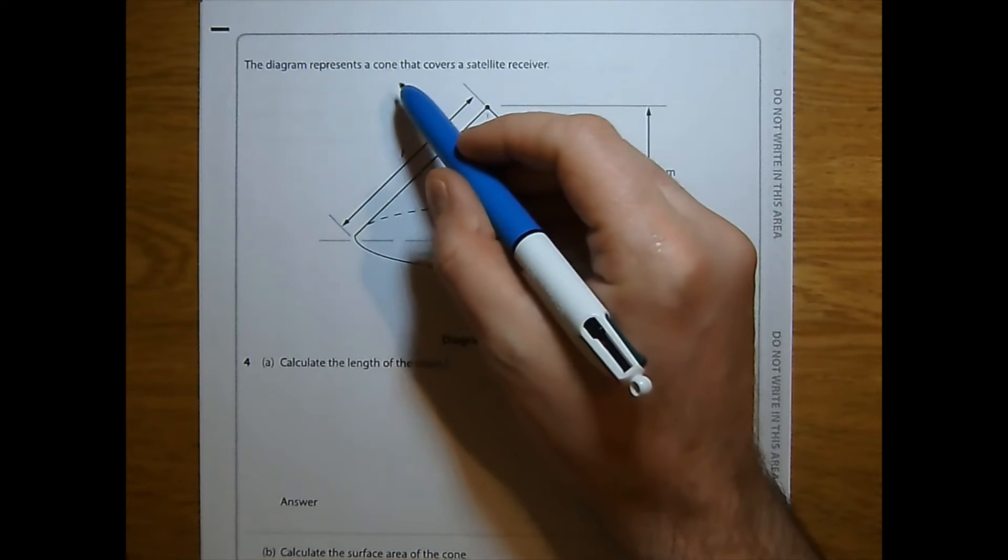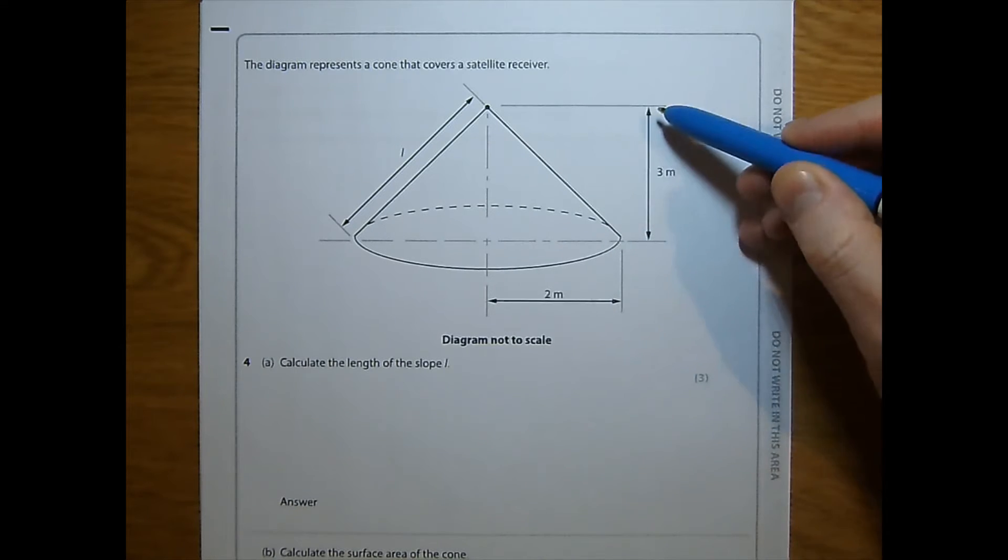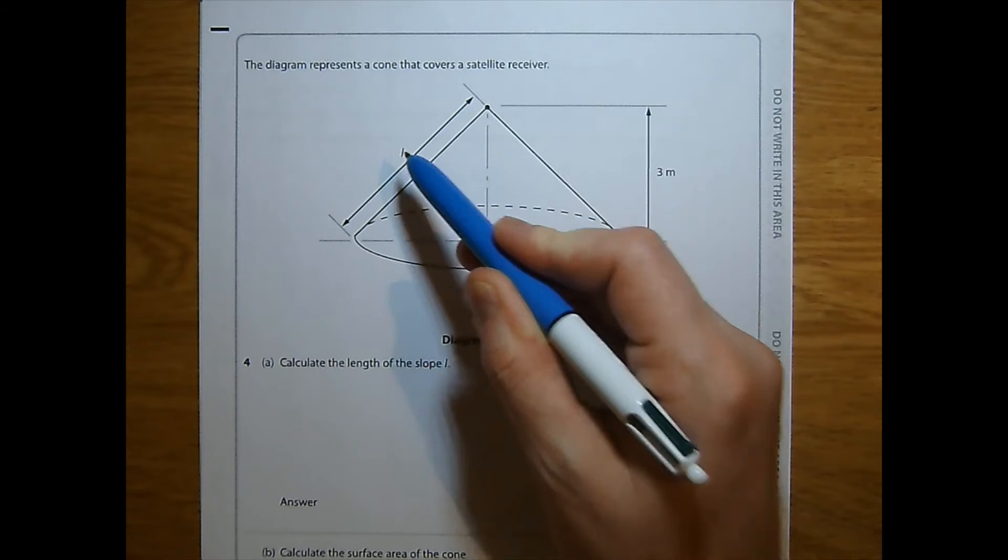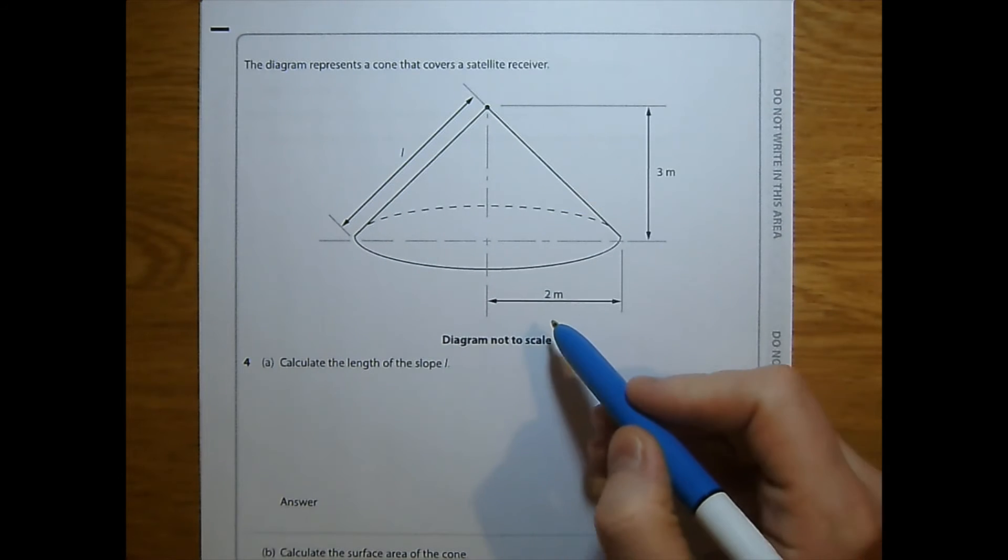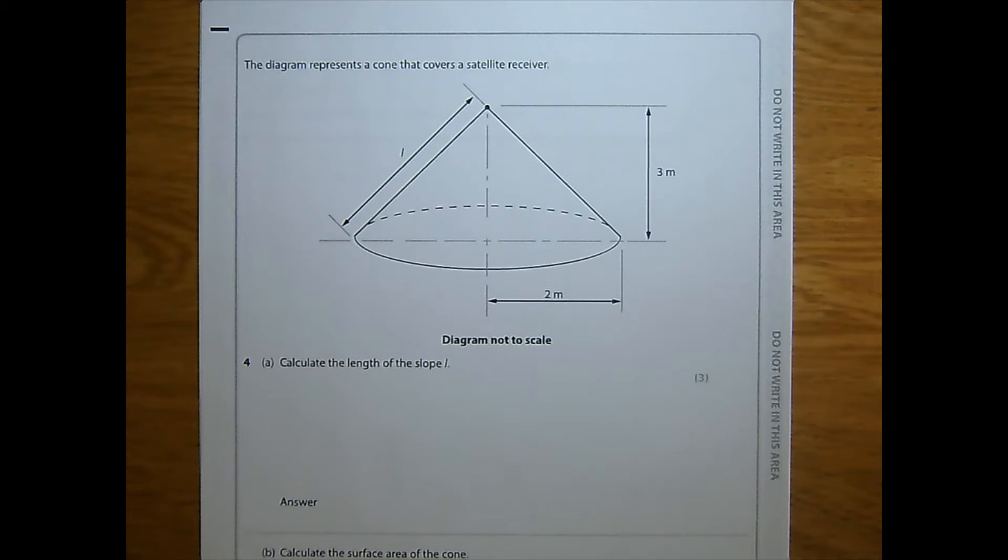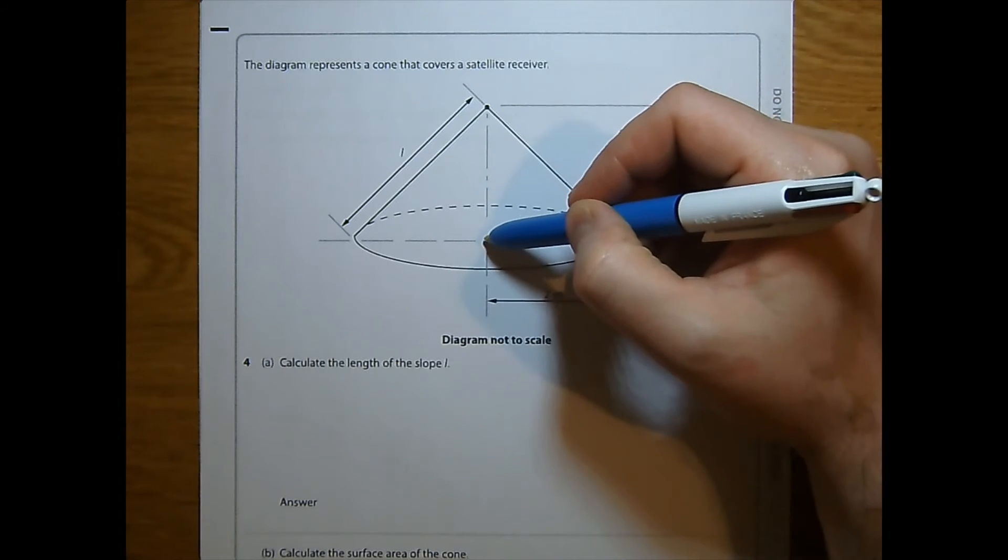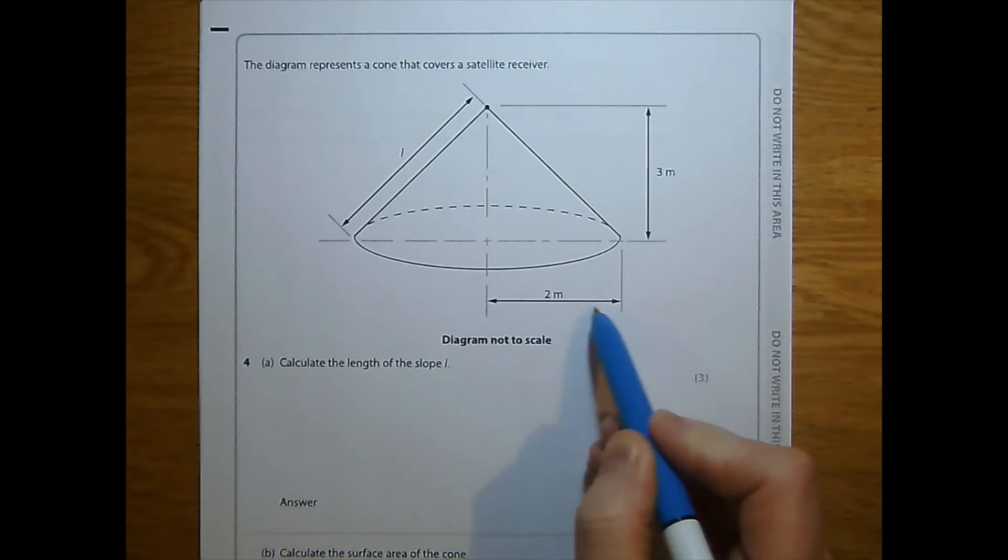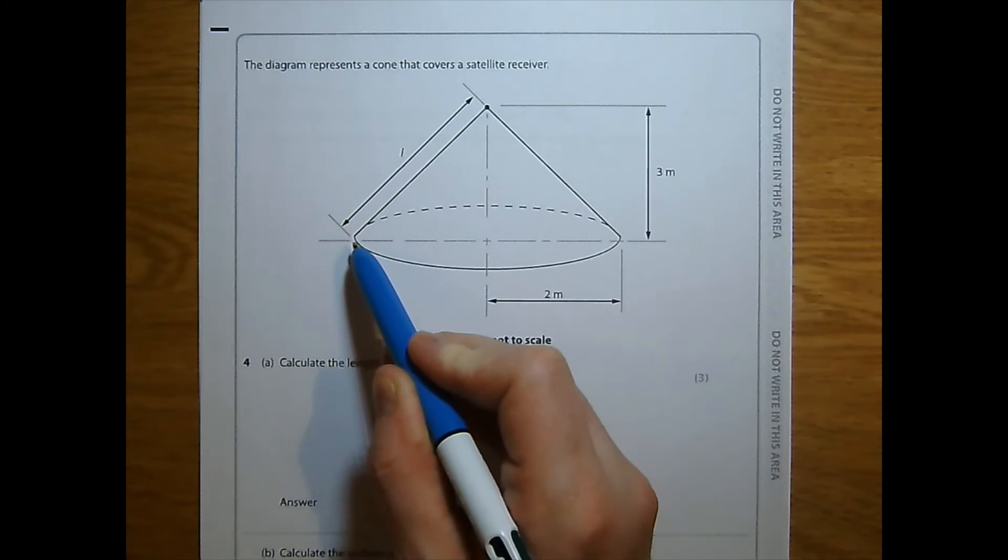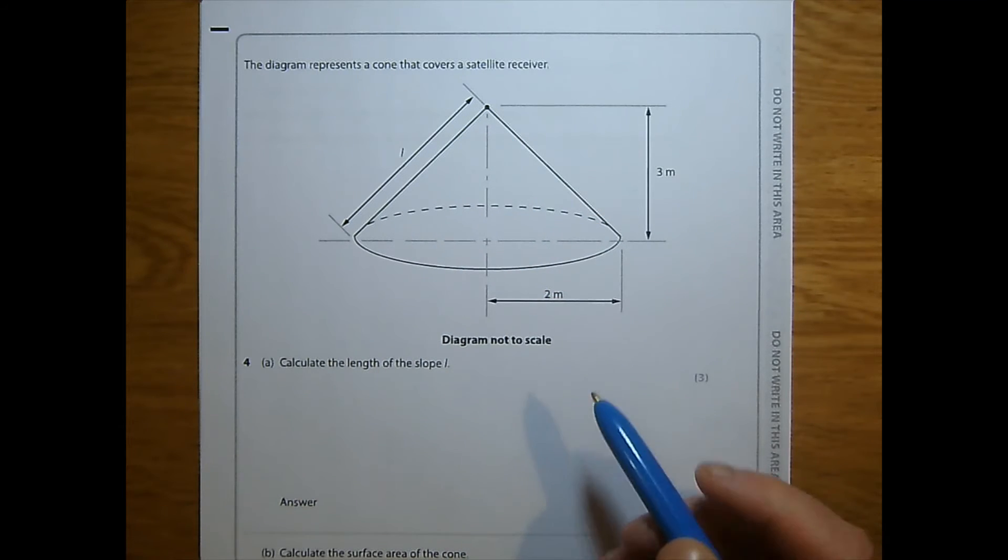Question 4. The diagram represents a cone that covers a satellite receiver. Here's the diagram. We've got the perpendicular height. The slope length is marked, but not given. That's an L, not a 1. We've got the radius here. It is the radius, not the diameter. We're asked to calculate the length of the slope, L. This can be done using Pythagoras, because this perpendicular height 3 here makes 90 degrees right angle triangle with the radius.